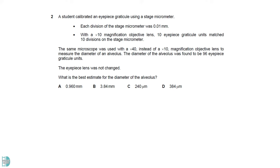The bullet points told us that at times 10 magnification, 10 eyepiece graticule matches 10 divisions on the stage micrometer. This means each eyepiece graticule is 10 micrometers. When we change the objective lens to times 40, which is 4 times greater than the original magnification, the measurement of the eyepiece graticule has to be divided by 4 as we zoom in 4 times greater.